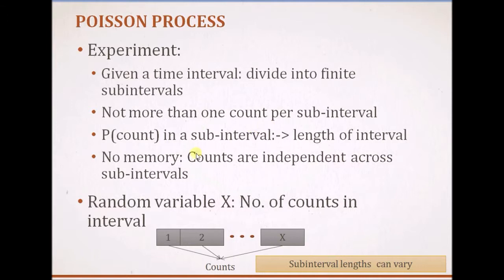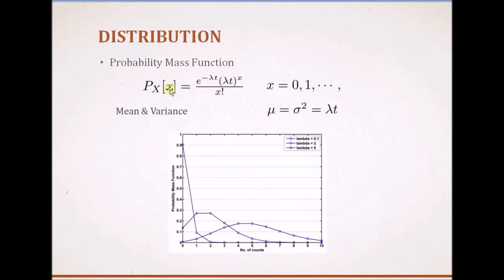Going back to the definition of the Poisson distribution, the random variable x is the number of events per time interval — usually a unit time interval or unit spatial length. It is given by the expression: a product of an exponential function with exponent negative lambda times t, where t is the time interval and lambda is the Poisson distribution's parameter, multiplied by lambda t to the power x, divided by the factorial of x. The value of x is a whole number since a count is always a whole number. The mean and variance of this distribution are both given by lambda times t, or simply lambda when t equals 1. So lambda is the key parameter for the Poisson distribution.